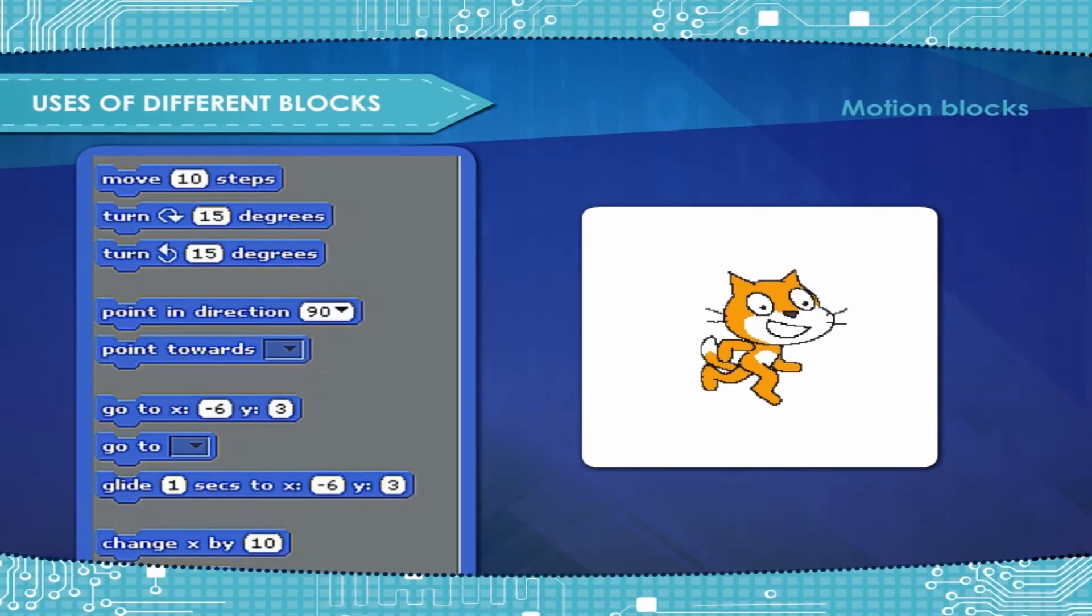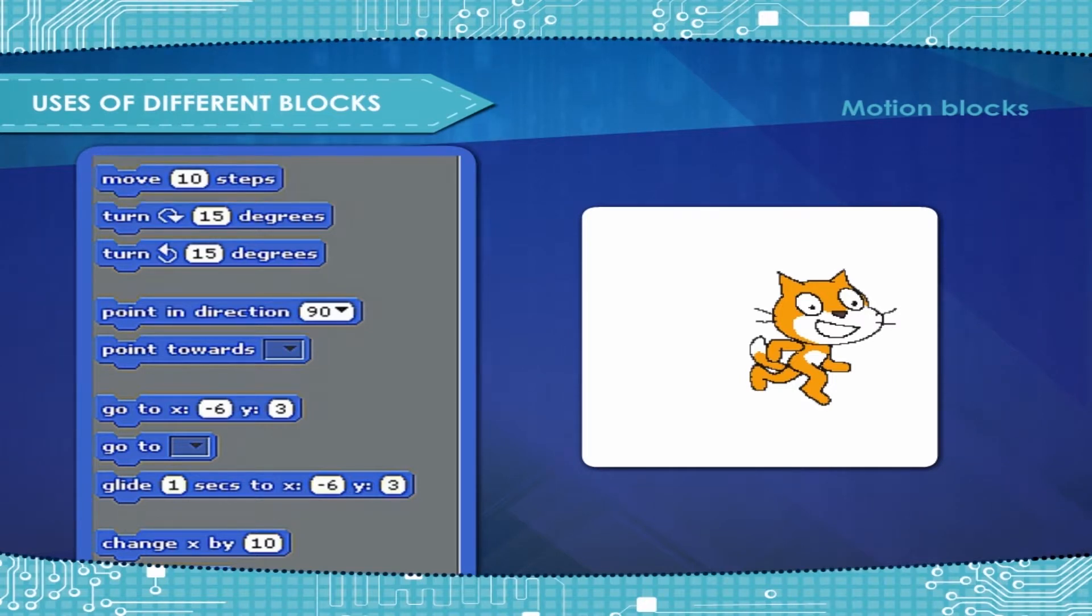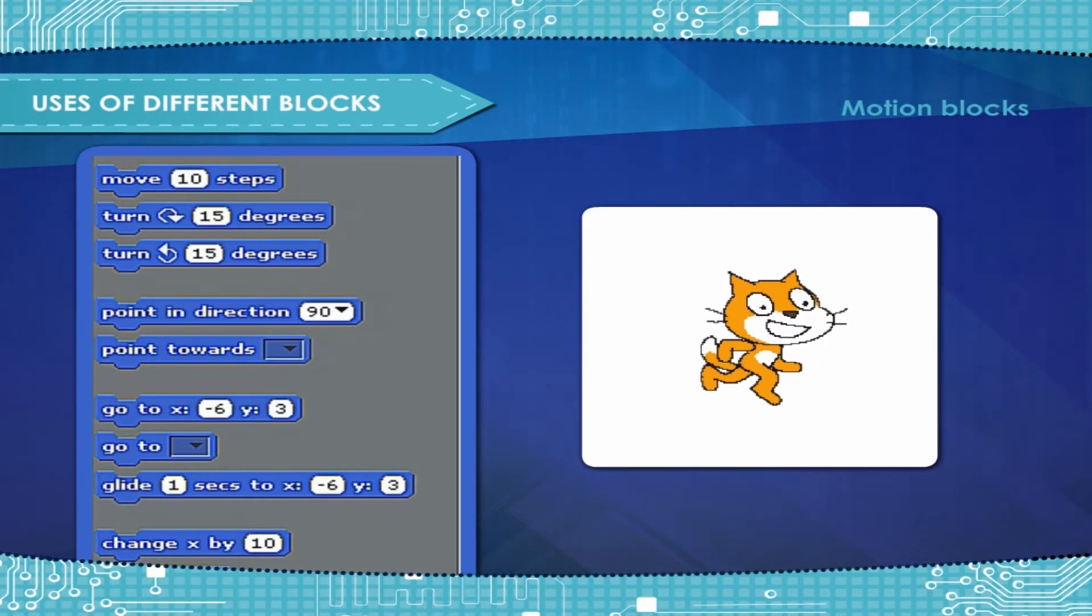Move steps: Moves the sprite forward the amount of steps in the direction the sprite is facing. Turn degrees clockwise: Turns the sprite clockwise the specified amount. Turn degrees counterclockwise: Turns the sprite counterclockwise the specified amount. Point in direction: Points the sprite in the direction.